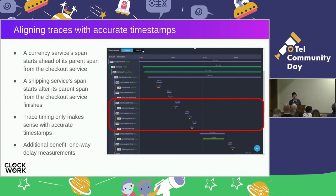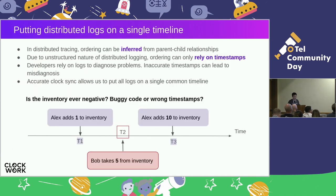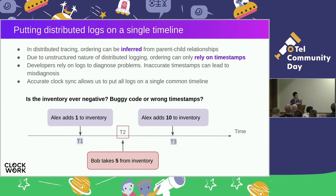The second use case of clock sync in observability is putting distributed logs on a single timeline. The OpenTelemetry community has been working hard on logs, and this is one area where accurately synchronized clocks will particularly help. In tracing, we can propagate context and infer ordering of spans from that context. However, this is not available in logs, because logs are by nature unstructured and we can only rely on timestamps to determine the ordering of events.